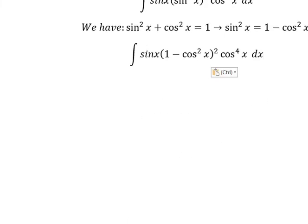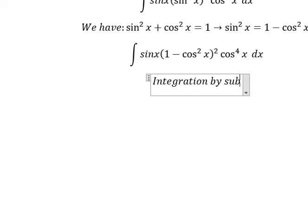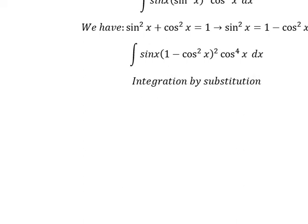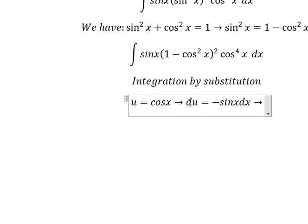Next we can use integration by substitution, so I will put u equals to cos x. Then we need to do the first derivative for both sides and we have negative sin x dx. Because we don't have the negative, so I will put the negative to the left.